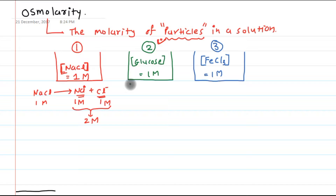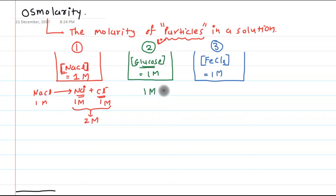In the second beaker, when glucose is dissolved in water, glucose will not dissociate — it will stay as it is. So the number of particles will be 1 molar.